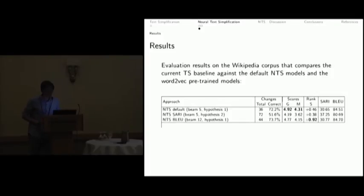In terms of results, the evaluation results on Wikipedia compare different neural text simplification models. The first one is the default with beam size 5 in the first hypothesis. It's the basic, vanilla, neural sequence-to-sequence model. We can see that the output has, in total, 36 correct changes. 36 changes from which 72% are correct, which is a pretty high number. Since it has not a very big amount of changes, we can see that the grammaticality and the meaning preservation have also high scores. However, in terms of simplicity, it's not really simplifying that much.